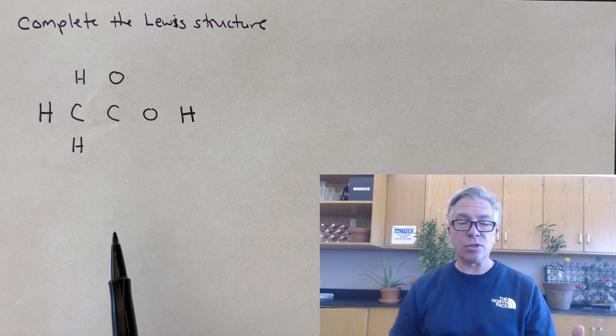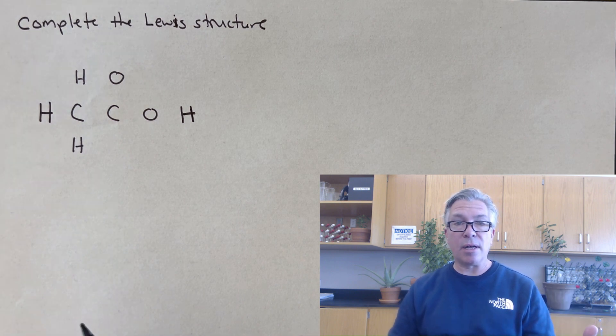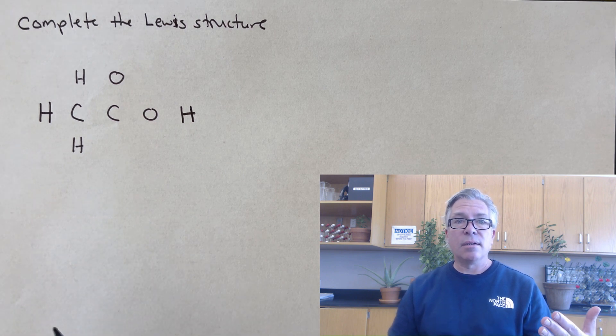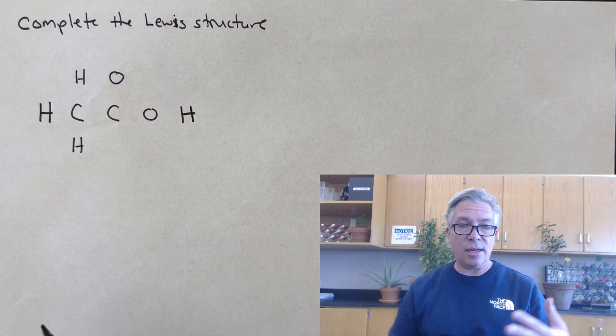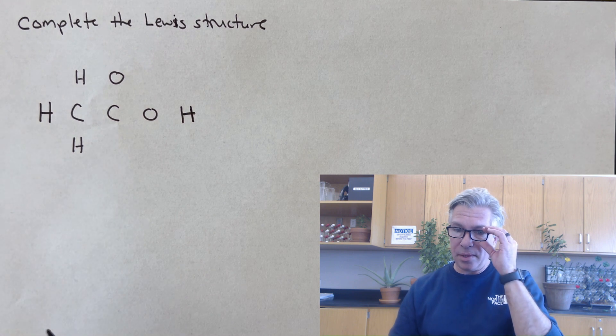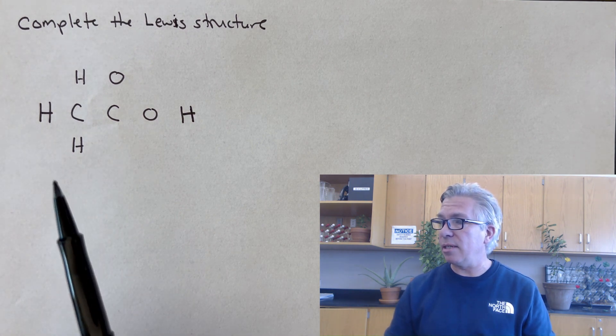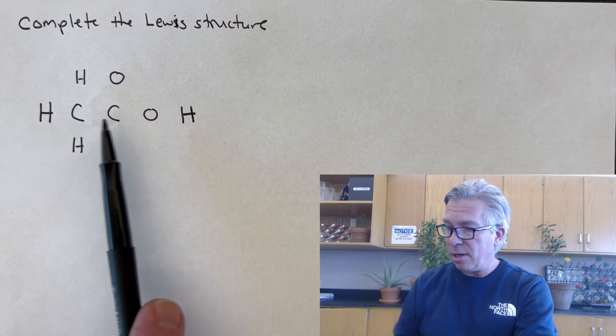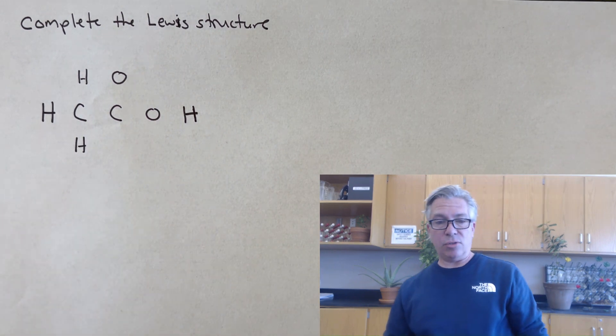You might recall that Lewis structures are diagrams of molecules that show which atoms are attached to which and how many valence electrons each one has and what's the arrangement of those electrons. Here's a typical one that I've seen recently and it involves four hydrogens, a couple of carbons, oxygens, and it says complete the Lewis structure.